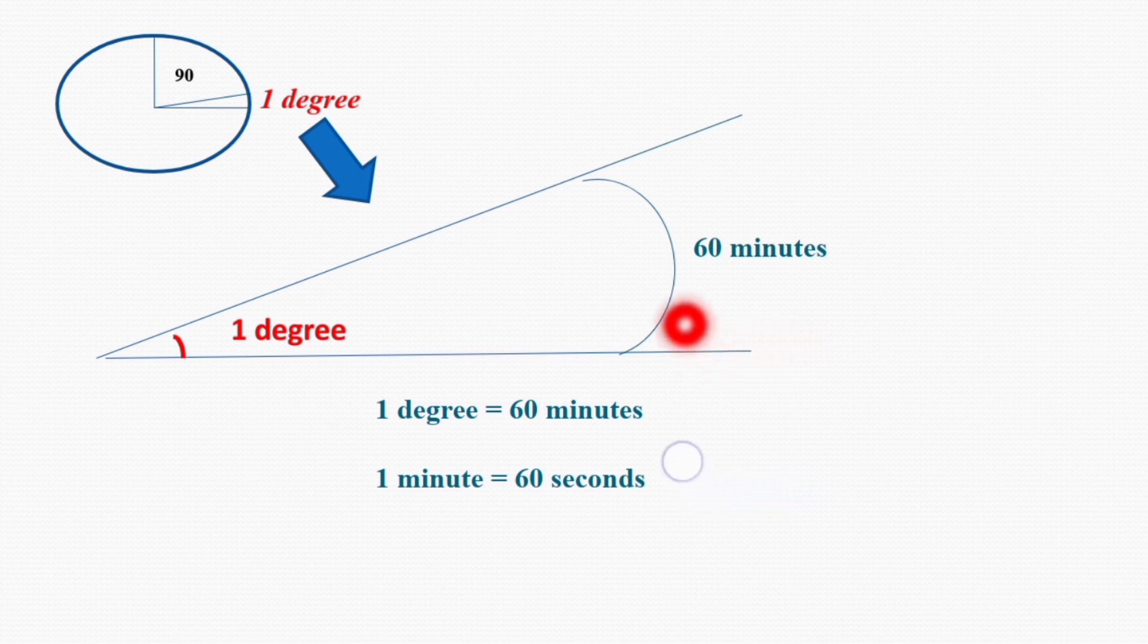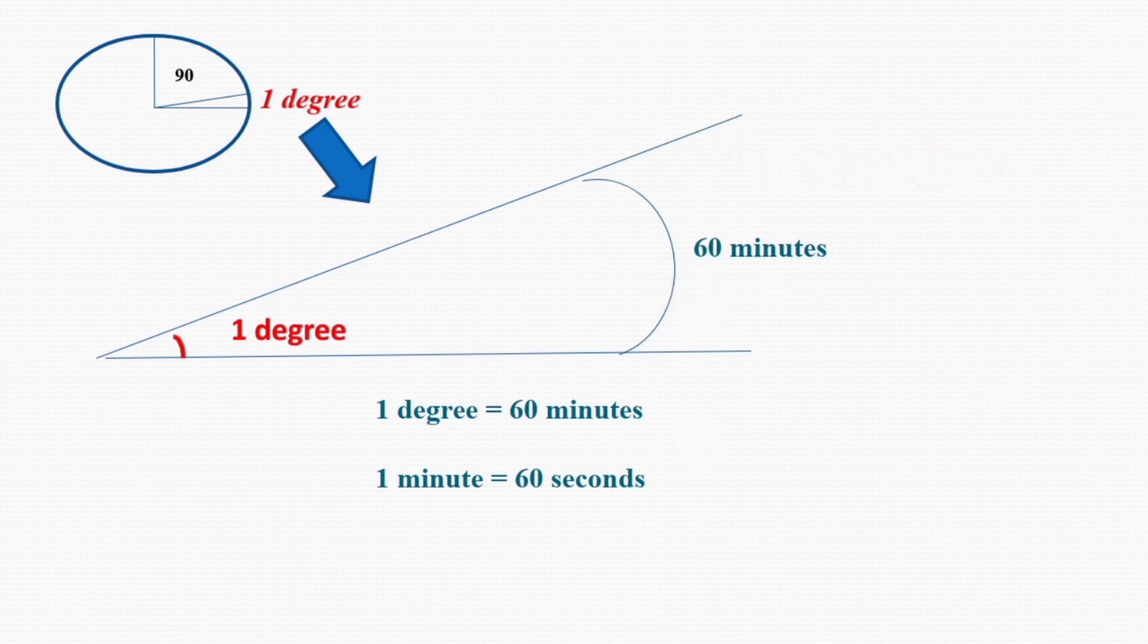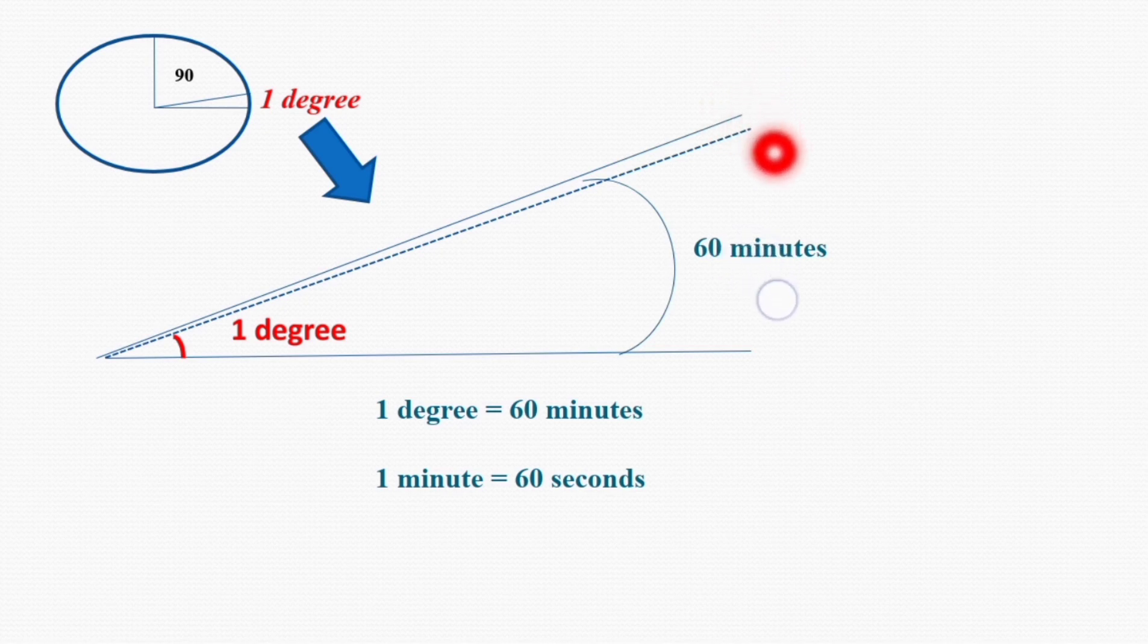If I divide this 1 degree into 60 smaller portions, then each portion will be a minute. It means a degree is made up of 60 minutes. This small distance is 1 minute, and now suppose we can divide this small distance into 60 further portions. Then each of these portions will be a second. So 1 minute is equal to 60 seconds.